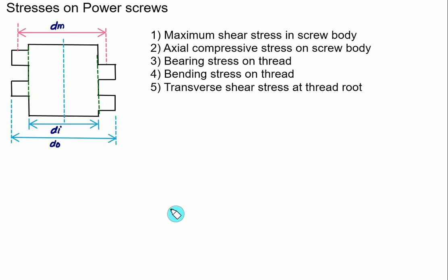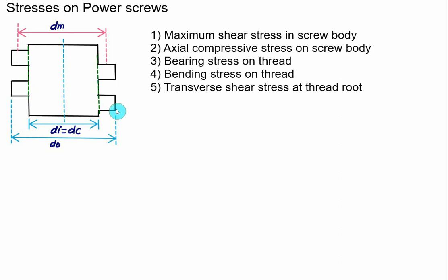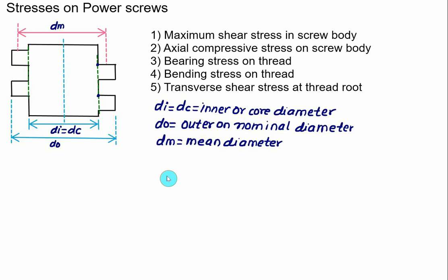Let's take a look at the stresses on the power screw. We'll discuss five stresses total. We consider a screw where Di is the inner diameter (also called the core diameter DC), DO is the outer diameter (also called the nominal diameter), and DM is the mean diameter. We'll consider square threads, where the portion projected outward equals pitch/2, the width also equals pitch/2, and the distance between two consecutive points is called the pitch. We investigate stress on two different parts: the inner core called the screw body, and the thread.